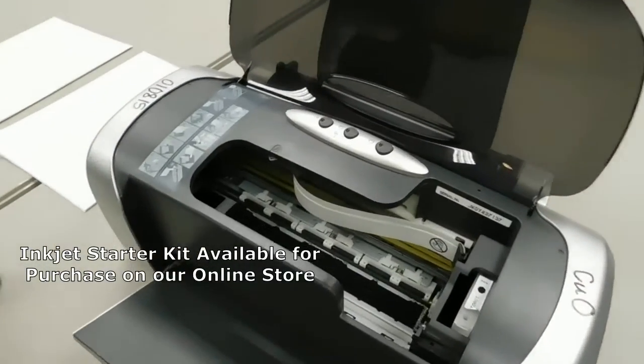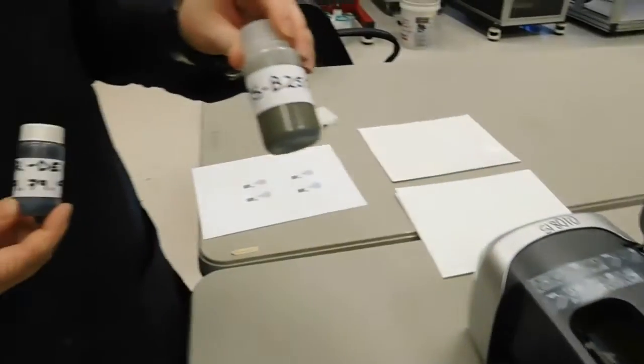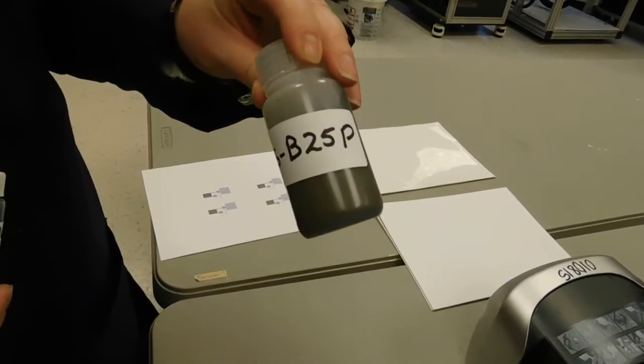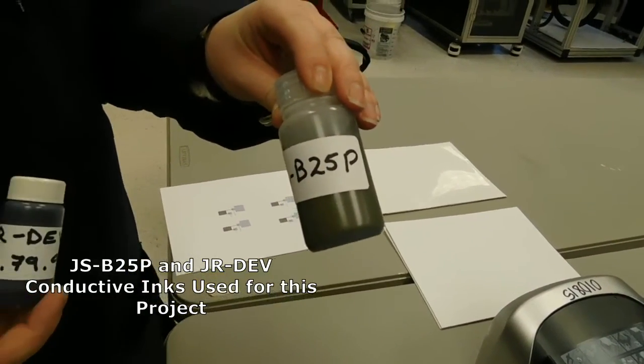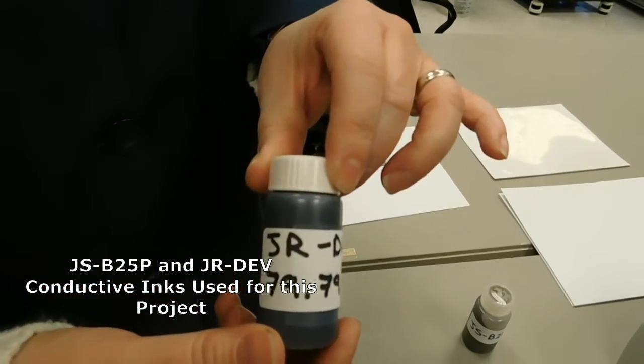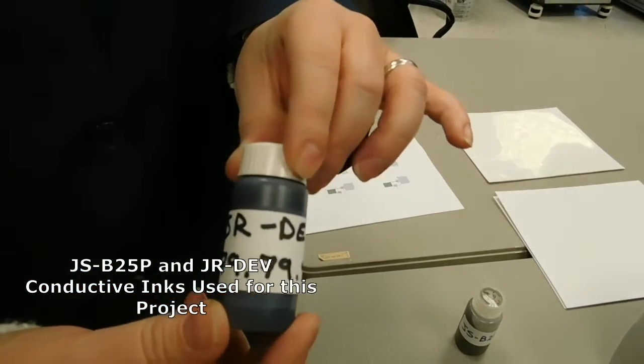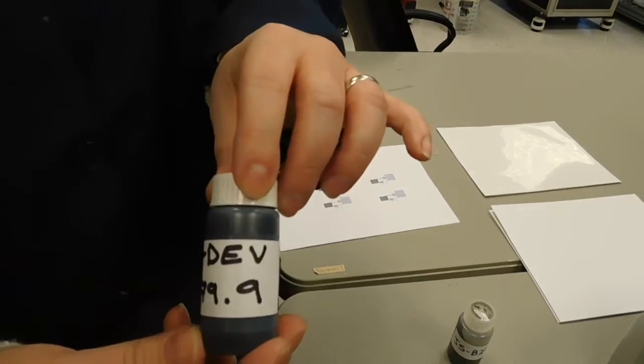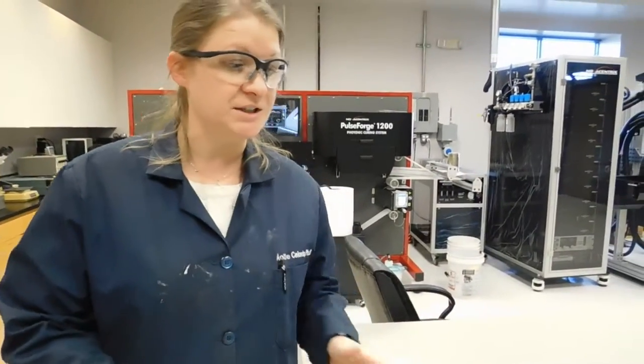We use these two inks. One is a silver ink JSB25P that is developed specifically for this printer. The other is a carbon ink JRDEV79.9, again specifically developed for this printer.